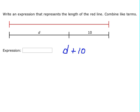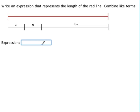Next problem. This problem we have two n's plus another four n. We add them all together to get the length of the red line, so we have one, two, plus four more makes six n.